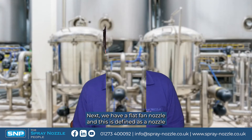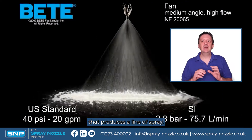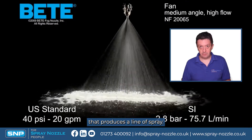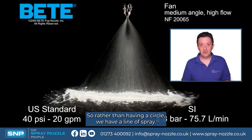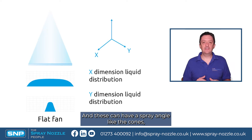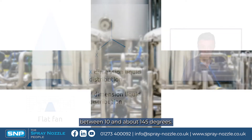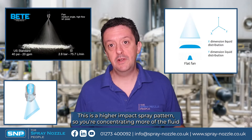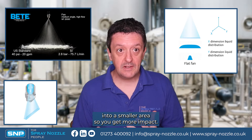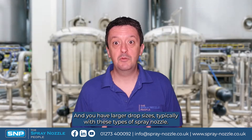Next we have the flat fan nozzle, which is defined as a nozzle that produces a line of spray. So rather than a circle, we have a flat fan pattern. These can have a spray angle like the cones, between 10 and about 145 degrees. This is a higher impact spray pattern because you're concentrating more of the fluid into a smaller area, and you typically have larger drop sizes with these types of spray nozzles.